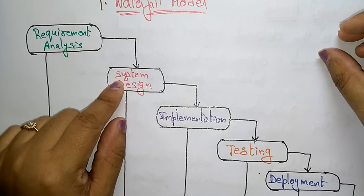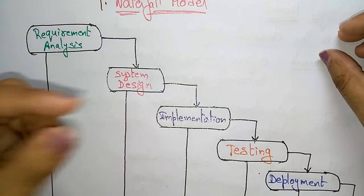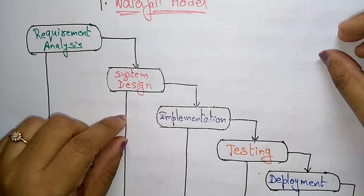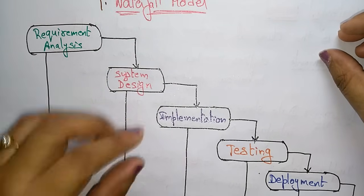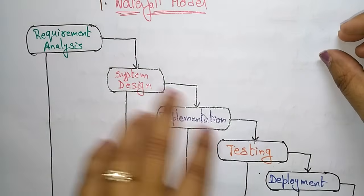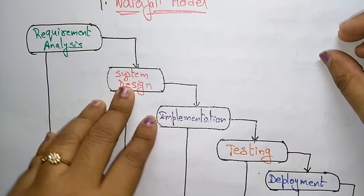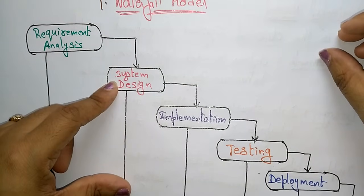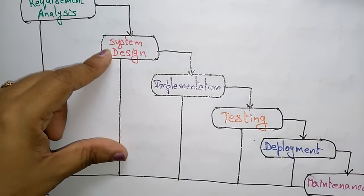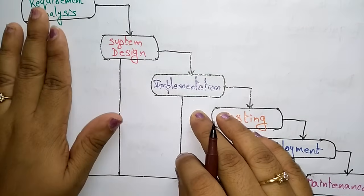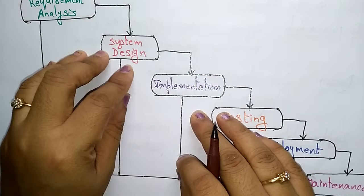After requirements, the next phase is system design. System design helps in specifying hardware and system requirements, and also defining the overall system architecture. It covers what type of hardware to use, what system requirements are needed, and how to design the complete system architecture. All of this is documented and designed in the system design phase.